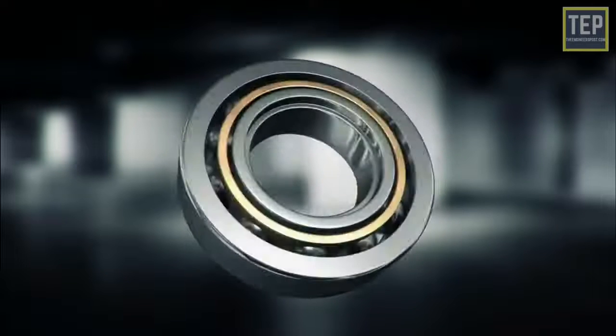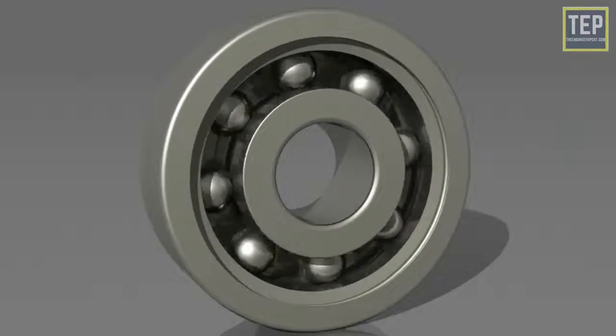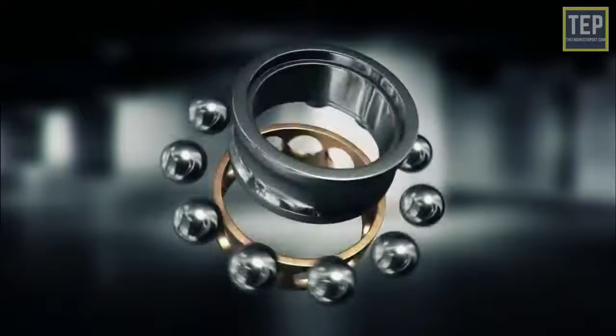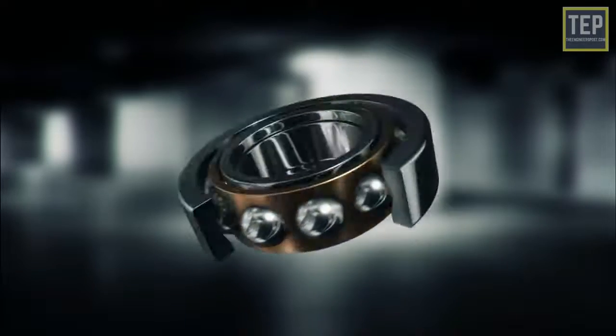Rolling elements carry the load without much friction, as the sliding friction is replaced with rolling friction. Rolling element bearings can be subdivided into two major types: ball bearings and roller bearings. Ball bearings are one of the most common types of bearing. It consists of a row of balls as rolling elements. They are trapped between two annulus-shaped metal pieces.